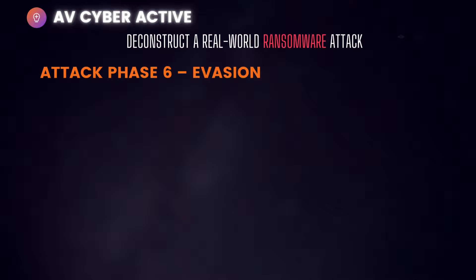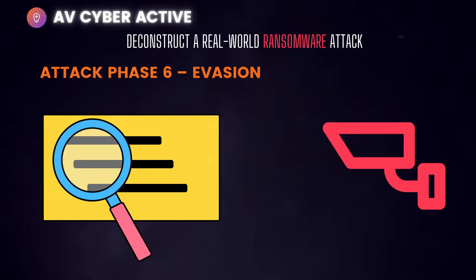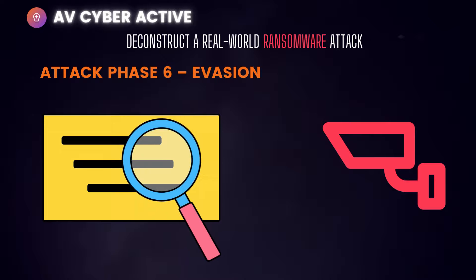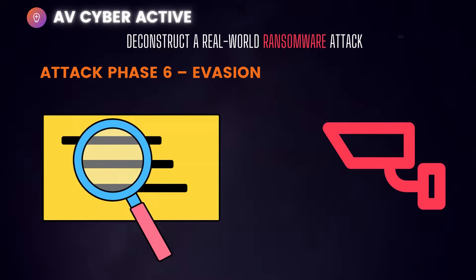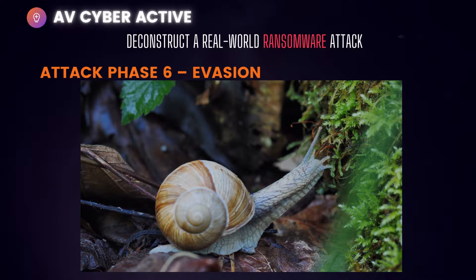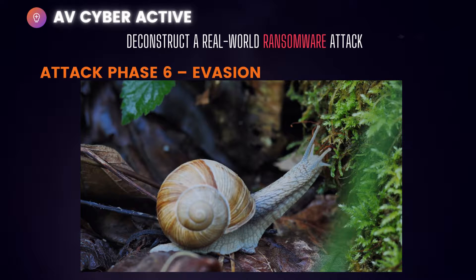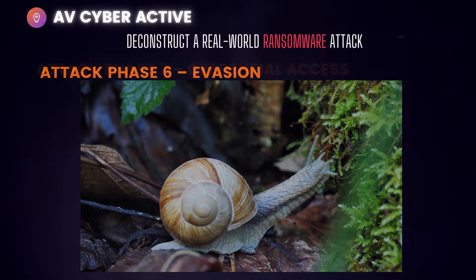Phase six is Defense Evasion. After initial access, the attacker's second priority is remaining undetected. This is where things get interesting, as the compromised system has some covert defense mechanisms while adversaries try to sneak around. To keep things clean, attackers remove output directories, CSV files, and PowerShell scripts to eliminate any Indicators of Compromise (IOCs) that endpoint tools can easily detect.